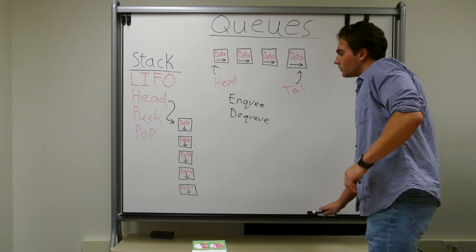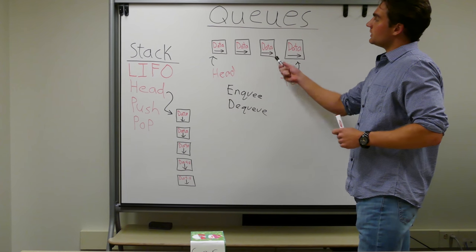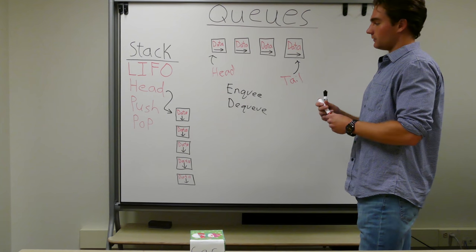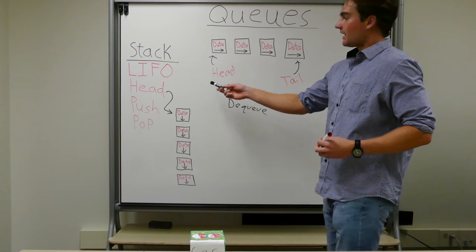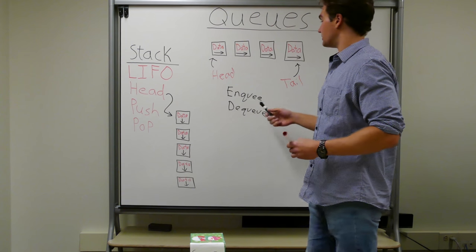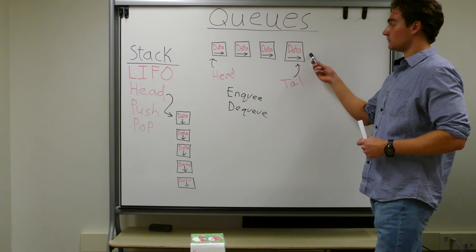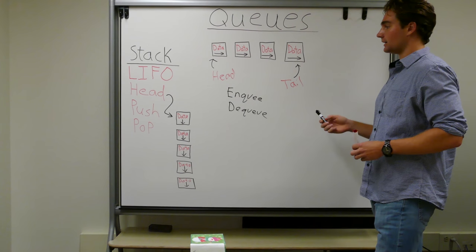So what to keep in mind is that these are very similar in the fact that they have a head. Right? This is the top of the stack. This is the front of the queue. What's different is this has a tail, which is the end of the line. Right? Think of it as the back of the line.